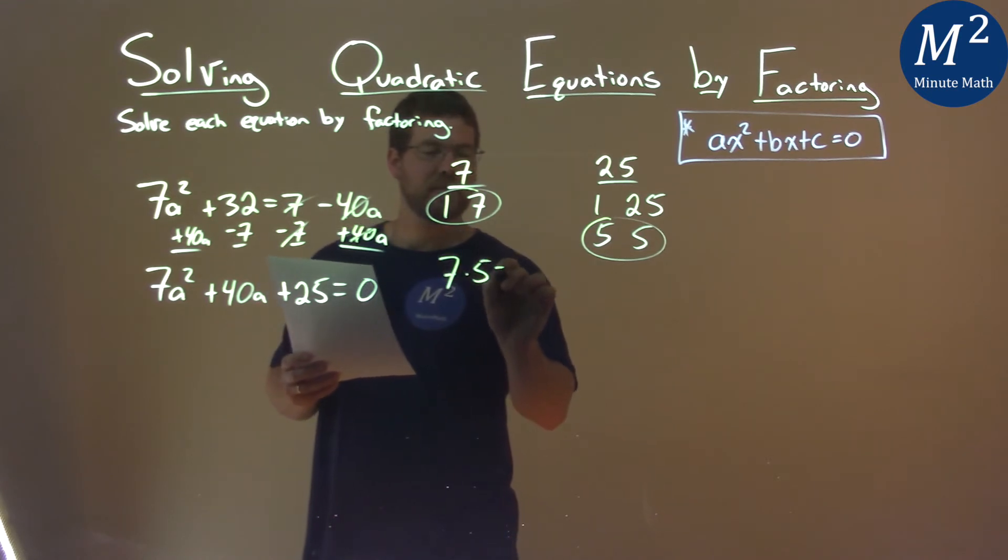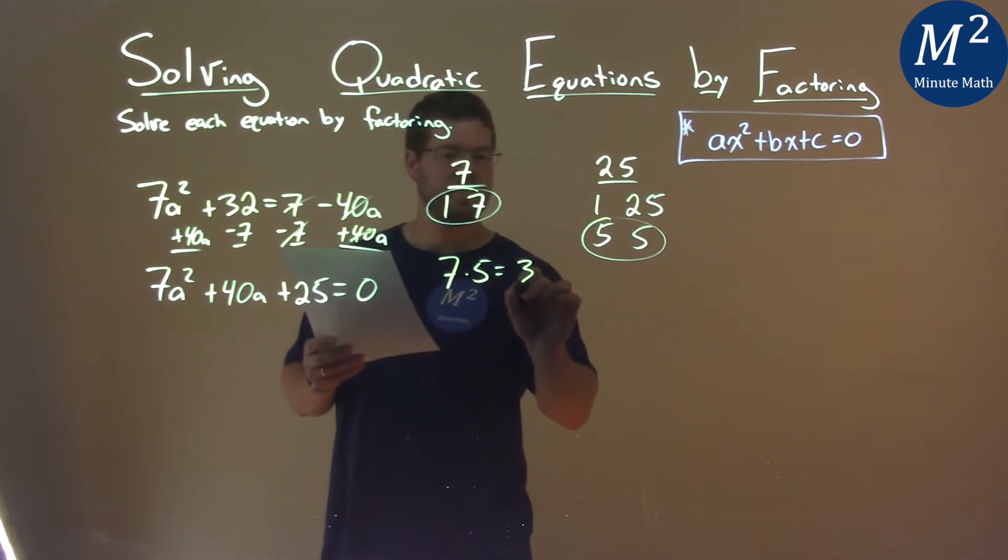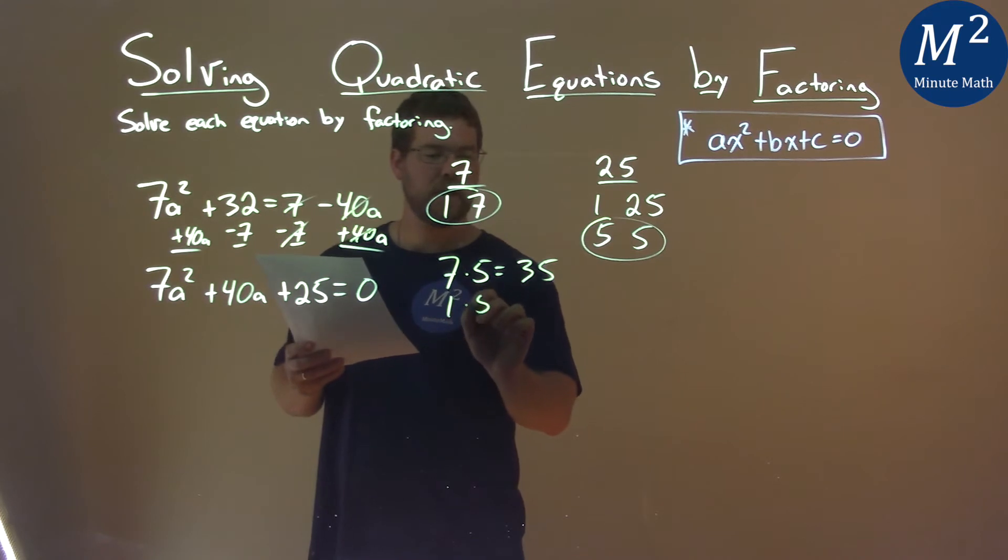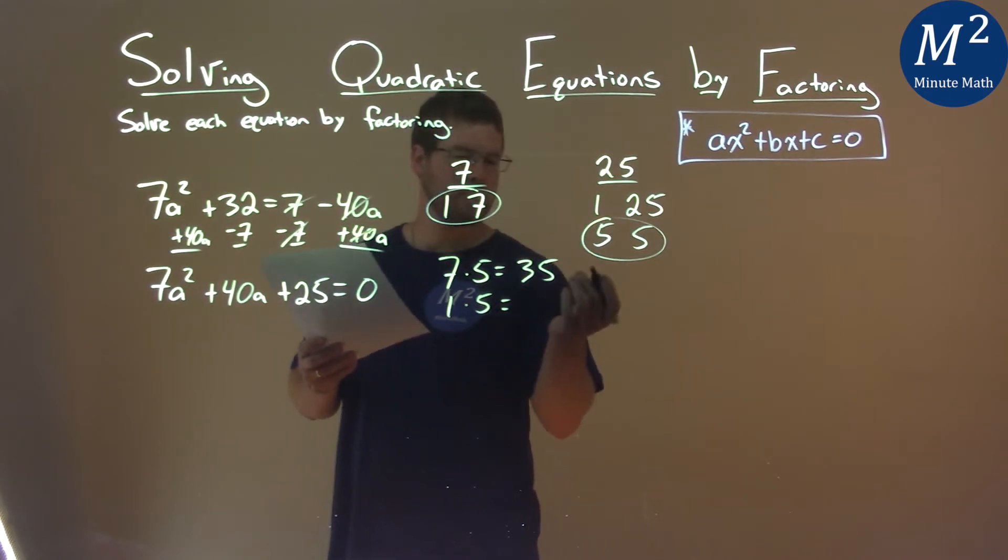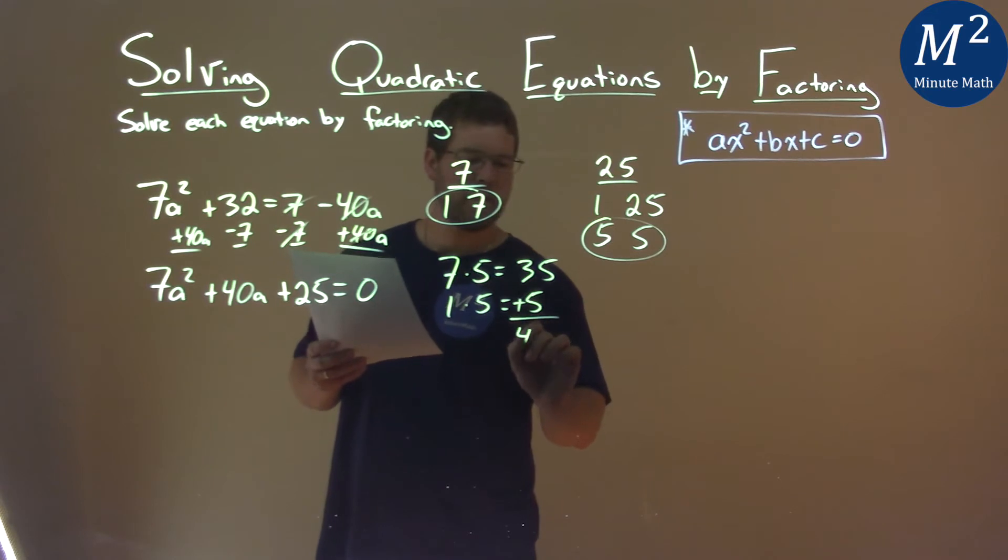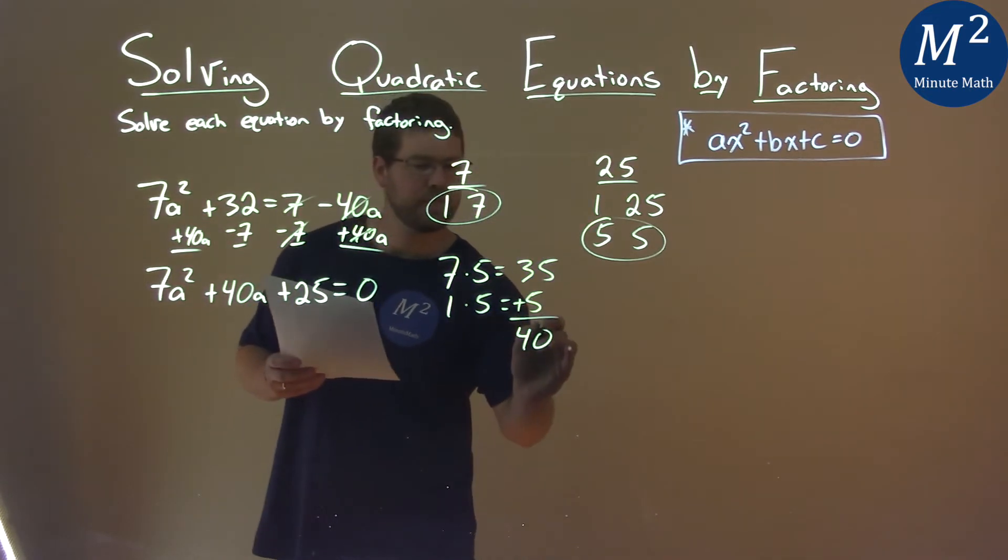7 times 5 is 35, and 1 times 5 is 5. We add them together and we get 40.